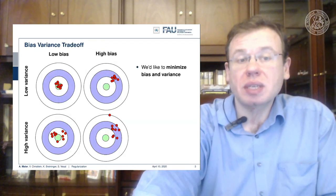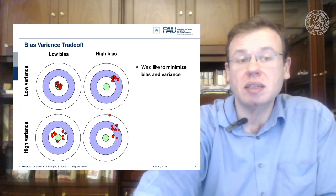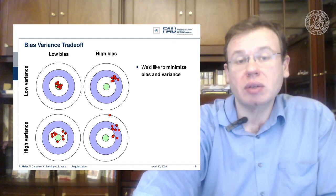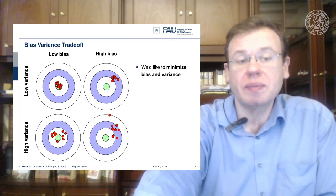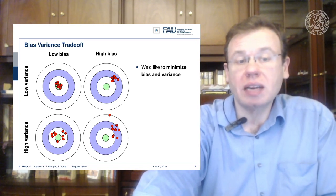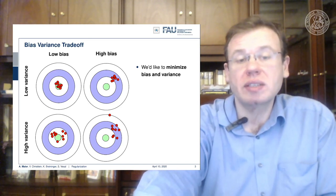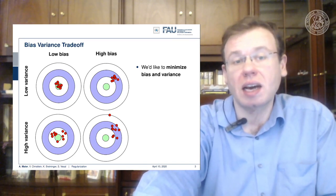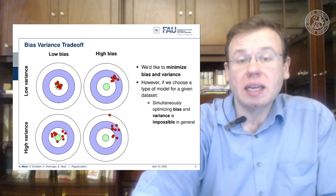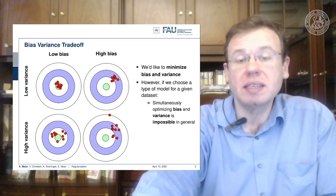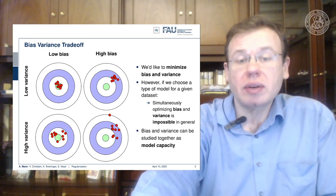We can visualize this: top-left shows a low-bias, low-variance model — essentially always right with little noise. Top-right shows a high-bias, low-variance model — very consistent but consistently off. Bottom-left shows a low-bias, high-variance model — considerable variation but correct on average. Bottom-right, which we want to avoid, is high-bias, high-variance — lots of noise and not even close to correct. Simultaneously optimizing bias and variance is in general impossible, and both can be studied together as model capacity.